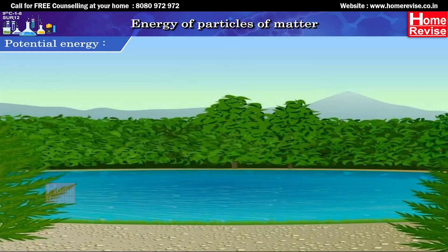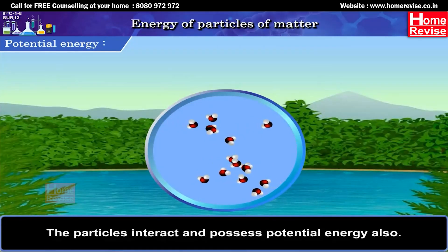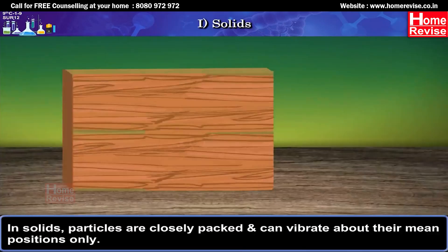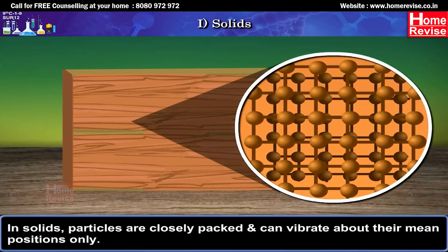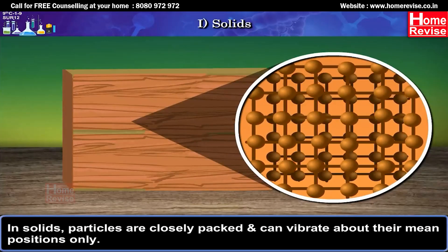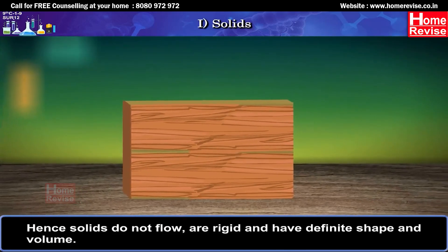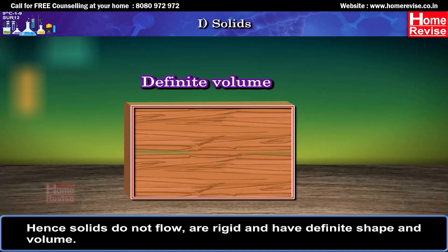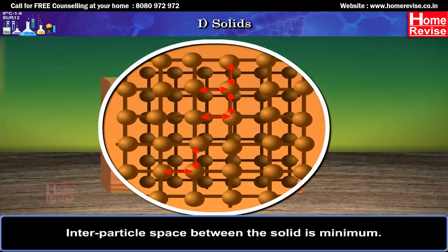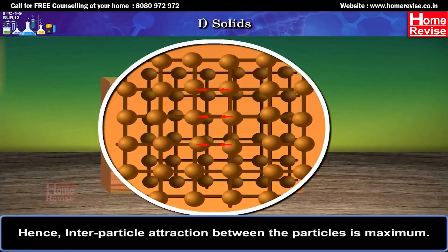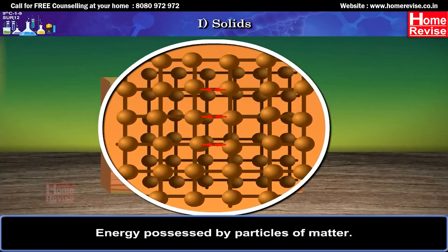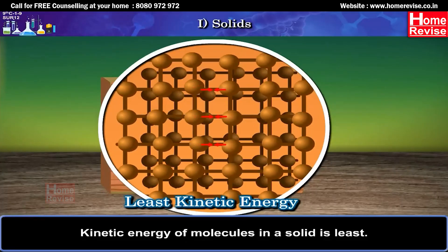Potential energy: The particles interact and possess potential energy also. First, solids: In solids, particles are closely packed and can vibrate about their mean positions only. Hence, solids do not flow, are rigid and have definite shape and volume. Interparticle space between solids is minimum; hence, interparticle attraction between the particles is maximum. Kinetic energy of molecules in a solid is least.